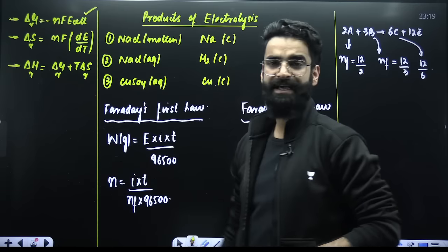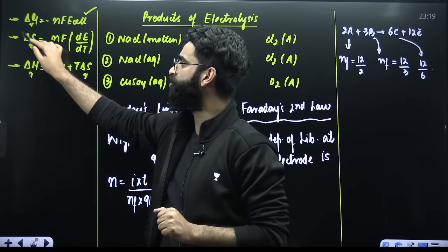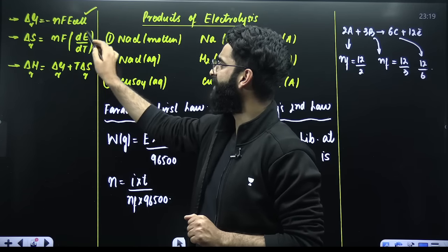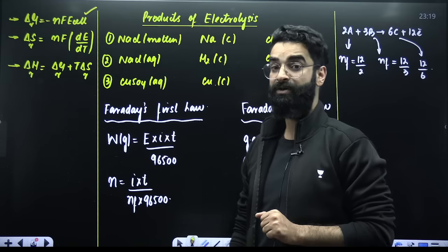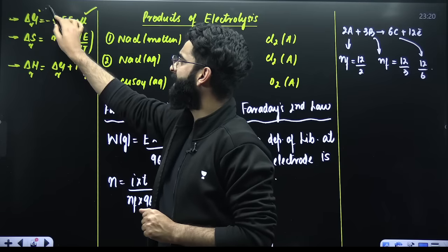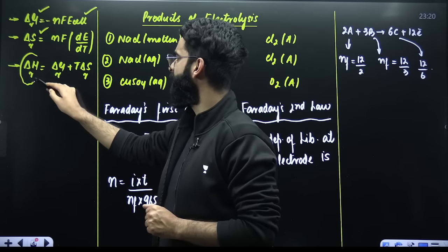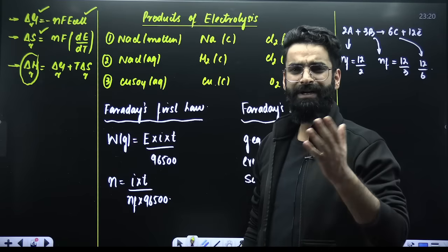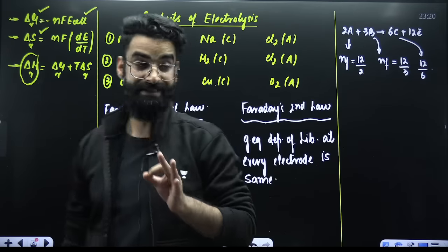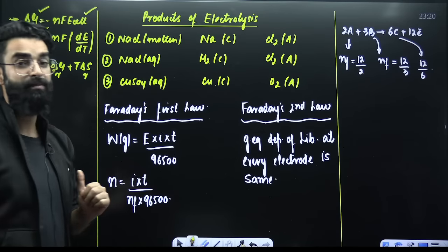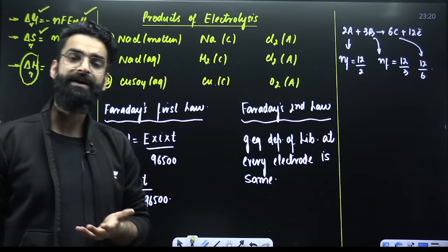For cell thermodynamics: ΔG = −nFE_cell. The entropy change for the cell reaction is ΔS = nF × (dE/dT), where dE/dT is the temperature coefficient of the cell. Using the relation ΔG = ΔH − TΔS, you can calculate ΔH for the cell once you have ΔG and ΔS.